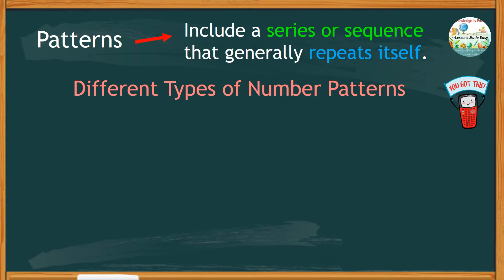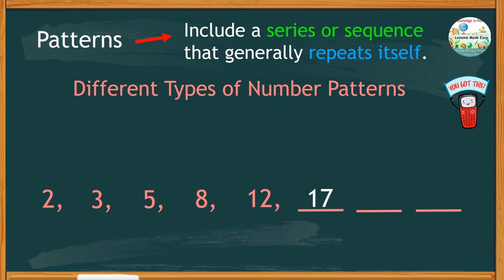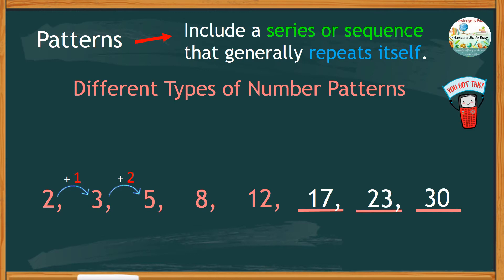Study this given series of numbers: 2, 3, 5, 8, and 12. If you were to continue this sequence, what would be the next three numbers? If you're thinking of 17, 23, and 30, then you're right. The given example shows an ascending pattern where from 2 to 3 you add 1, then from 3 to 5 you add 2, from 5 to 8 you add 3, and from 8 to 12, 4 is added. It means the next number can be obtained by adding 5, which makes 17. Plus 6 is 23, and plus 7, which makes 30.